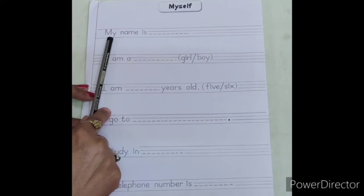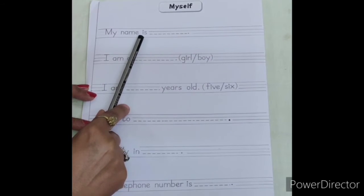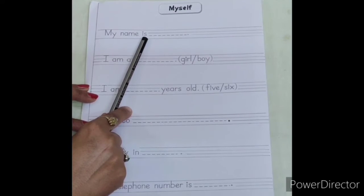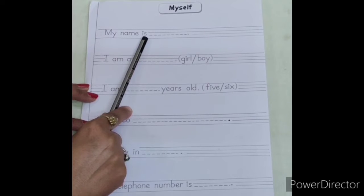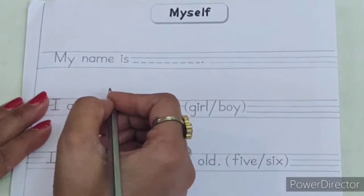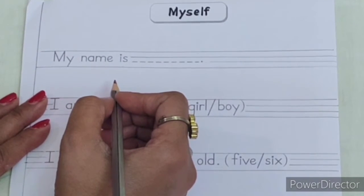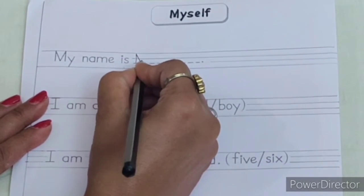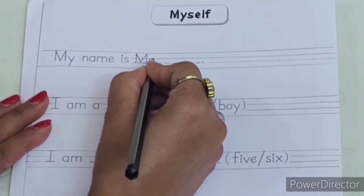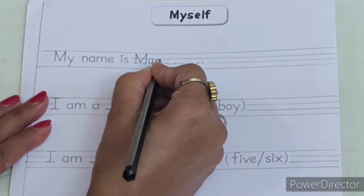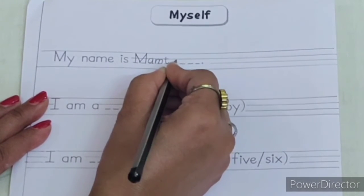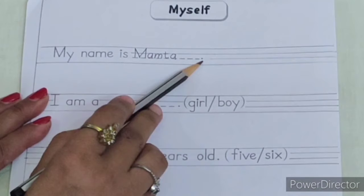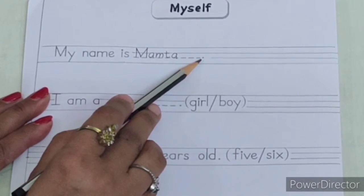My name is. So here you have to write your name. As you all know your name. Yes, I am writing my name. Children, while writing the name, first letter will be capital. As I am writing capital M-A-M-T-A. And at the end of each sentence, there should be a full stop as it is already given in your book.